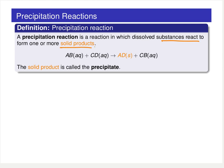You're going to see a solid product. A generic form for a precipitation reaction in this course is something where you have two compounds — an AB and a CD compound — both aqueous, dissolved in solution. They come together and form a solid product, and we call that solid product the precipitate.